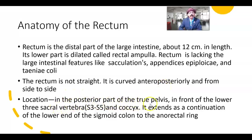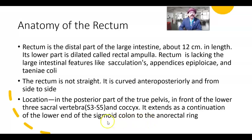Location: in the posterior part of the true pelvis, also called the lesser pelvis, in front of the lower three sacral vertebrae — sacral vertebra 3, sacral vertebra 4, sacral vertebra 5, and coccyx. It extends as a continuation of the lower end of the sigmoid colon to the anorectal ring.